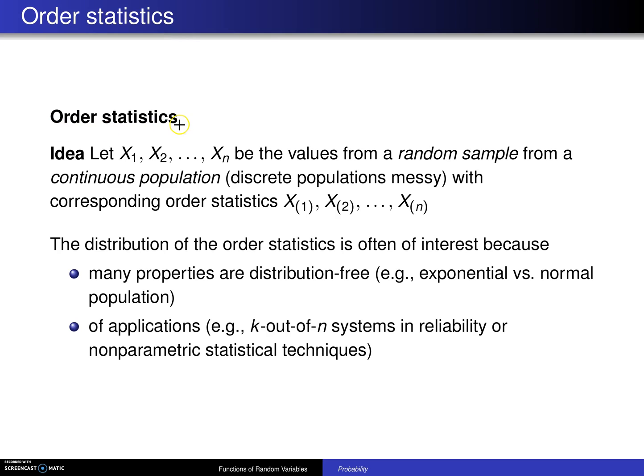So here's the notion associated with order statistics. Idea is to let x₁, x₂, up to xₙ be the values from a random sample from a continuous population, discrete populations are a little bit messier, with corresponding order statistics x₍₁₎, x₍₂₎, up to x₍ₙ₎.